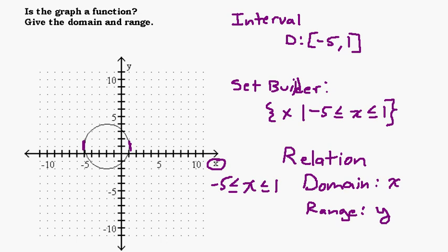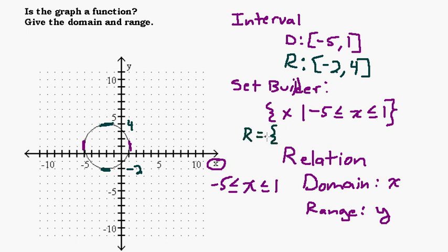The y values are going to determine the range — how far up and down this graph goes. It looks like it goes down to negative 2 and up to 4. So our range in interval notation would be from negative 2 up to 4: [−2, 4]. When doing interval notation, always put your smaller number first. In set builder notation, the range is the set of all y such that negative 2 is less than or equal to y, and y is less than or equal to 4.